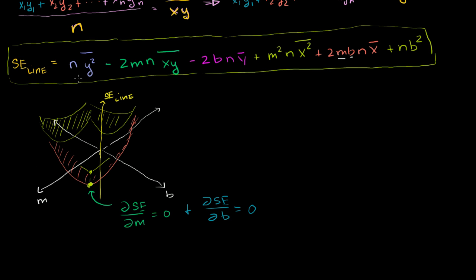Where we left off, we had simplified our algebraic expression for the squared error to the line from the n data points. This expression would be a surface in three dimensions, where for any m and b, it gives a point on that surface representing the squared error for that line. Our goal is to find the m and b that minimize the squared error, and the way we do that is by finding the point where the partial derivative with respect to m is 0, and the partial derivative with respect to b is also equal to 0.